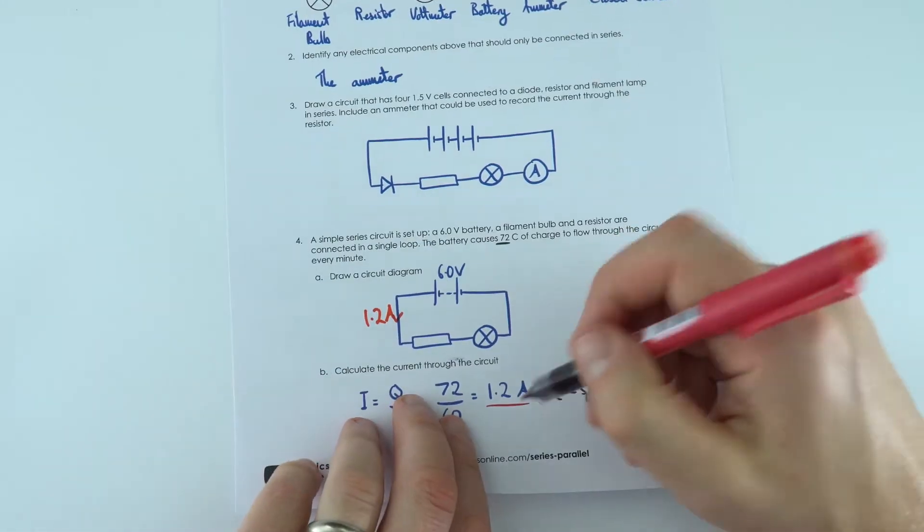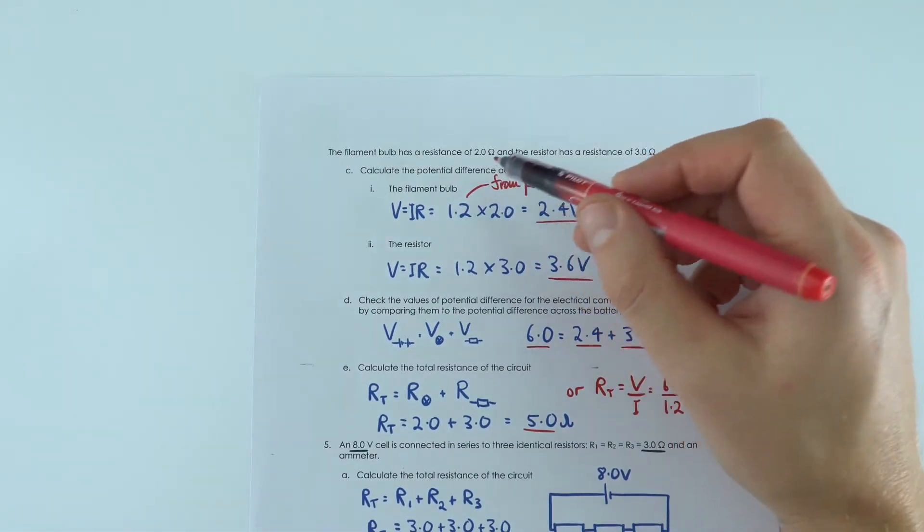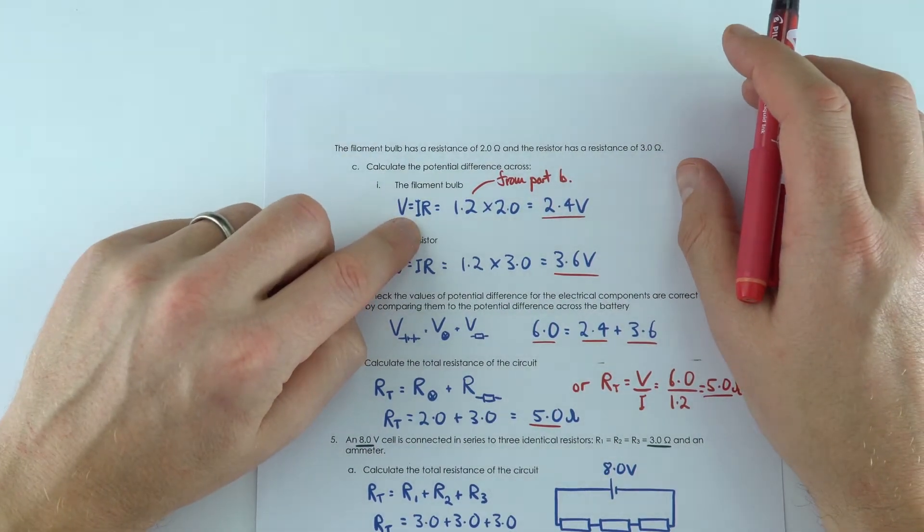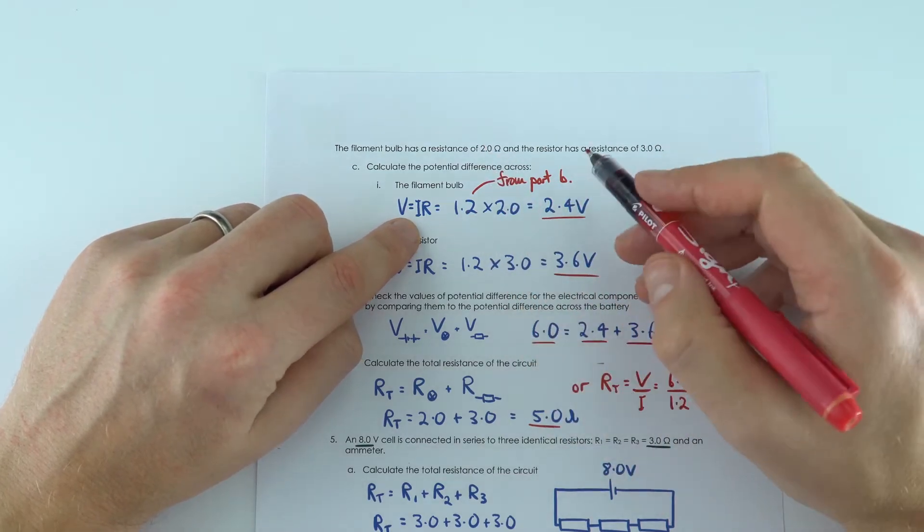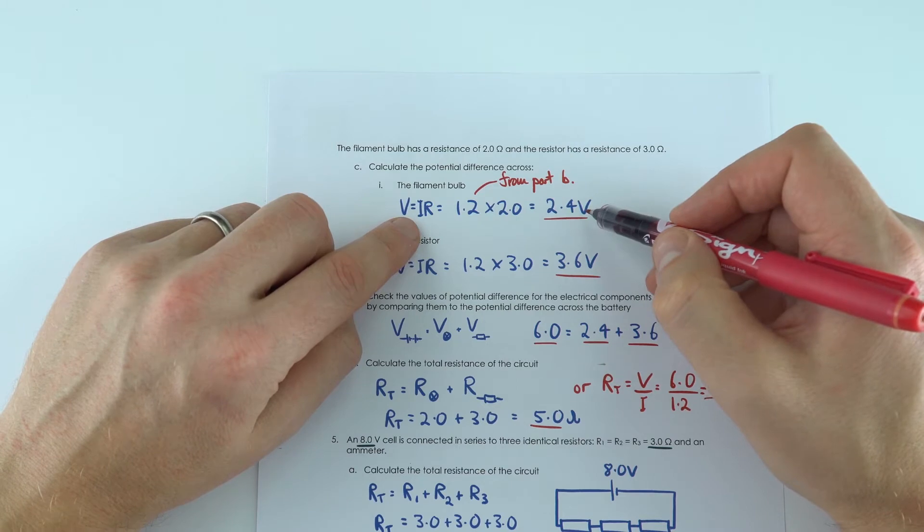Now we then use this value here of 1.2 in the next part over here. So what's the potential difference across the filament bulb? Well we know the current going through it is 1.2, the resistance is 2 ohms and therefore the current times the resistance is equal to the potential difference which was 2.4 volts,